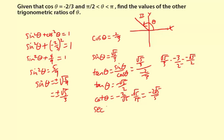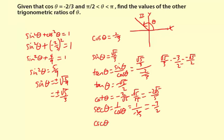The secant of theta is one over cosine theta, which is one over negative two-thirds, which equals negative three over two. And the cosecant of theta is the reciprocal of the sine of theta. The sine of theta was square root of five over three, so the reciprocal is three over square root of five. Multiplying by square root of five over square root of five equals three square root of five over five.